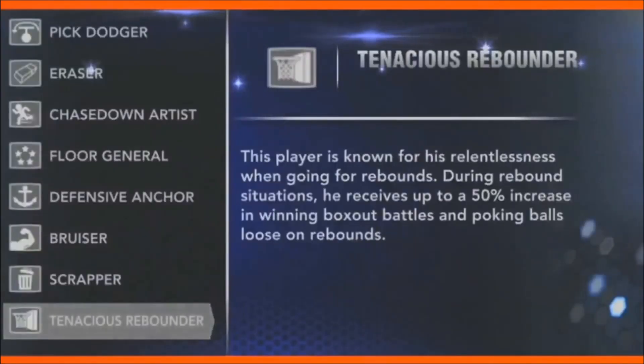Last year we had a signature skill called Scrapper that encompassed both rebounding and hustle plays. We wanted to split that apart because some guys are good at scrapping and some are good at rebounding. We kept Scrapper as it was but took the rebounding out and created Tenacious Rebounder. Tenacious Rebounder will win your box-out battles, try box-out moves more often, and rip rebounds from the air better than most players.